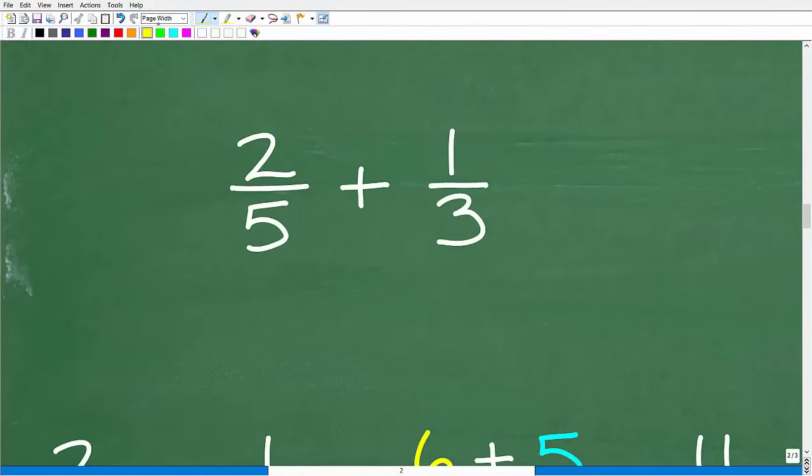All right, so let's take a look at this simple example. I'm going to show you this technique, and then we're going to apply this technique on our actual problem. Okay, so here we have 2 fifths plus 1 third. Now typically, you would say, all right, well, the LCD is 15, so I'm going to multiply this by 5, and this by 5, and this by 3, and this by 3. Again, we could do that, and it's not too difficult because this problem is pretty easy. But we're not going to do this problem in this manner.